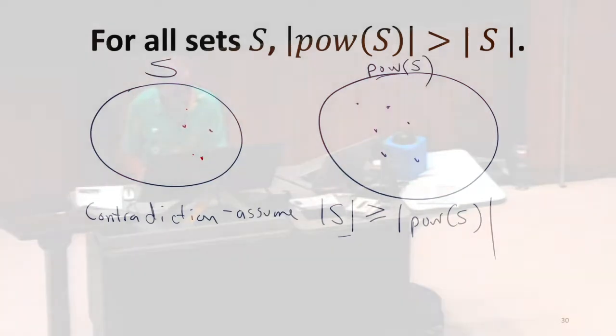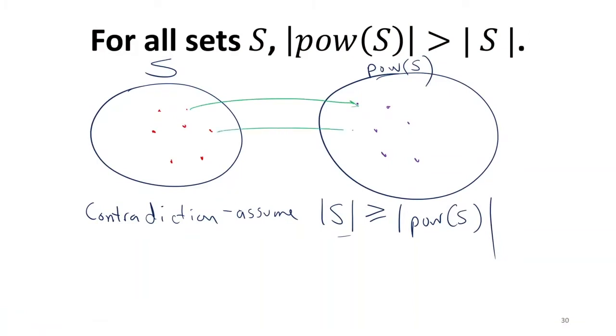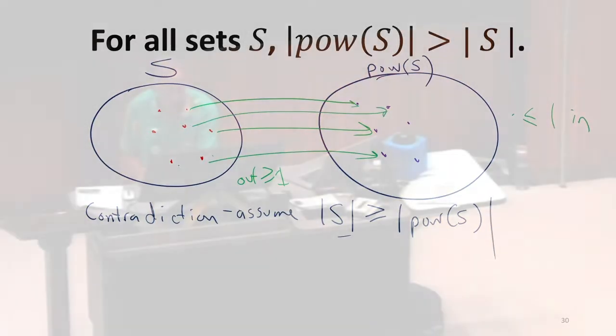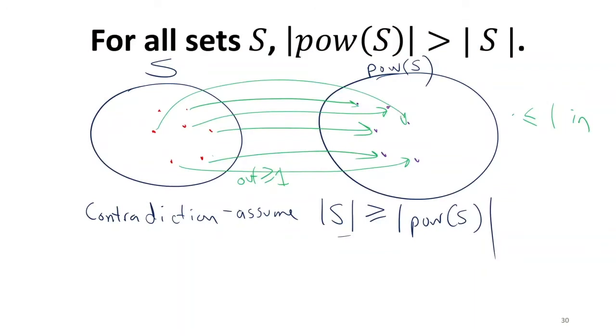Every element of the power set, some function, we want at least one out and less than or equal to one in. If we have that, then S is the same size. If we're assuming S is bigger than the power set, that function must exist.